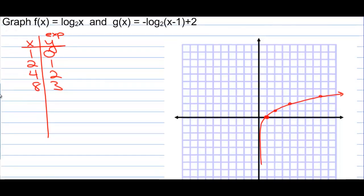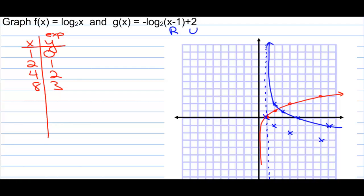Now there's a negative on the outside, which means reflect over the x-axis. So the reflected points go down to (2, -1), (4, -2), (8, -3). There is a vertical asymptote right on the y-axis — it has not moved yet because we only reflected over the x-axis. Then when we shift right 1, that vertical asymptote gets pushed over to x = 1. We shift every point right 1 and up 2, then connect the dots — the graph goes all the way up to infinity. Make sure you show that the asymptote has moved.